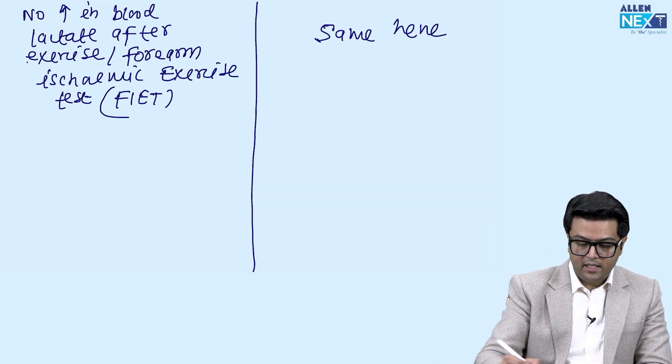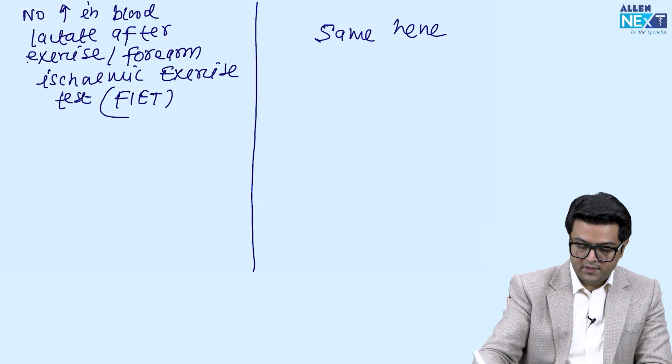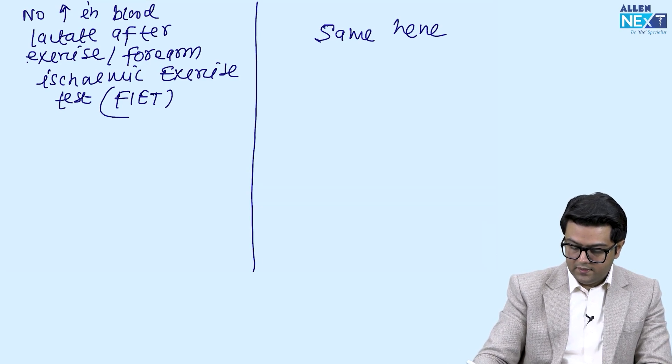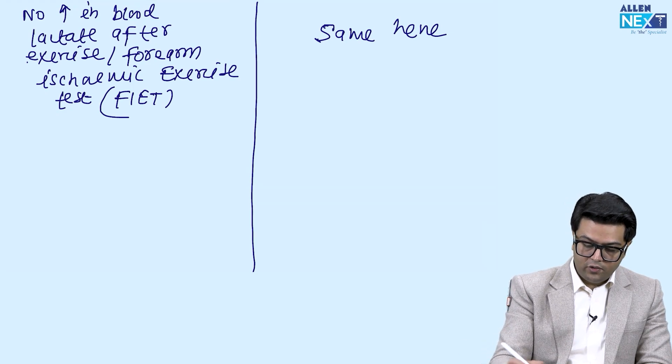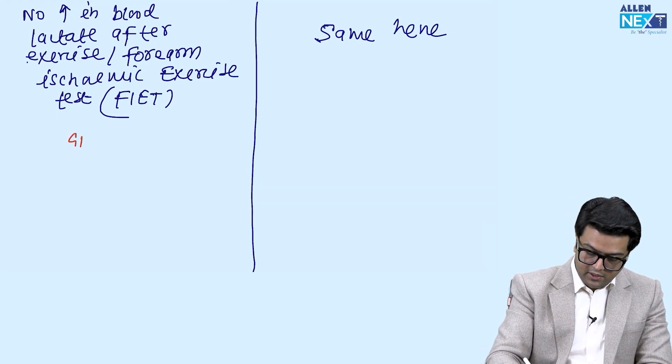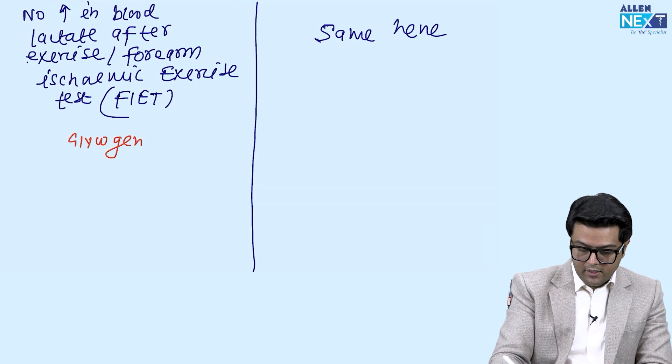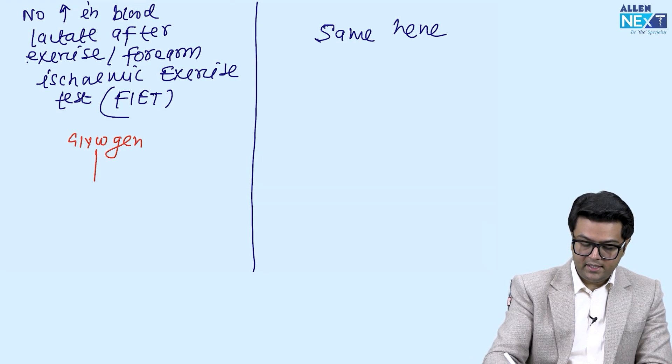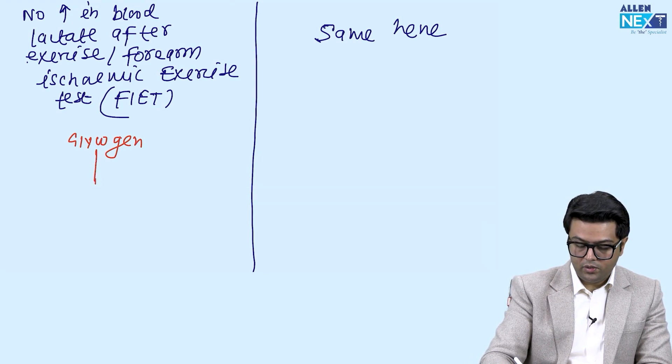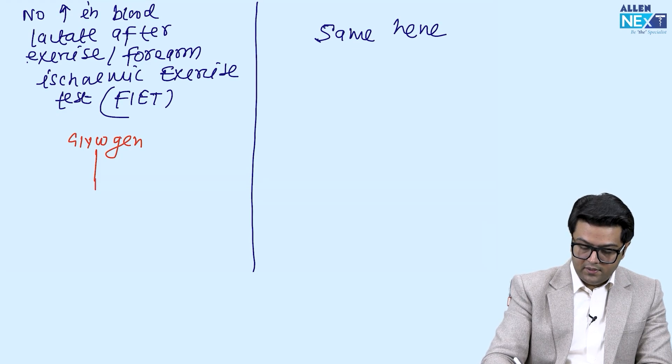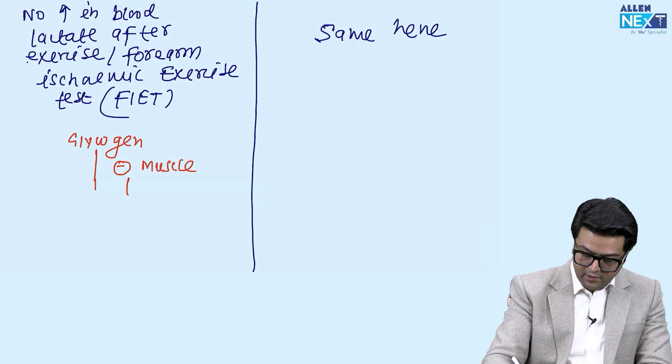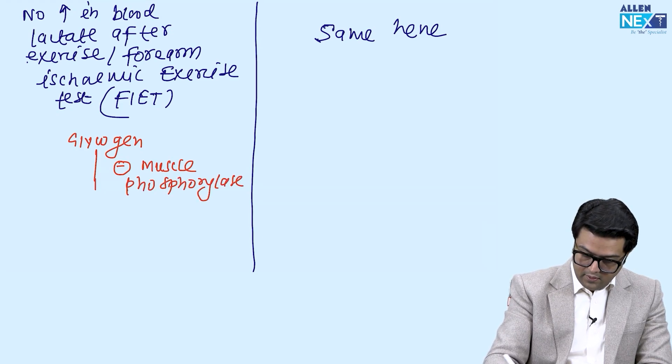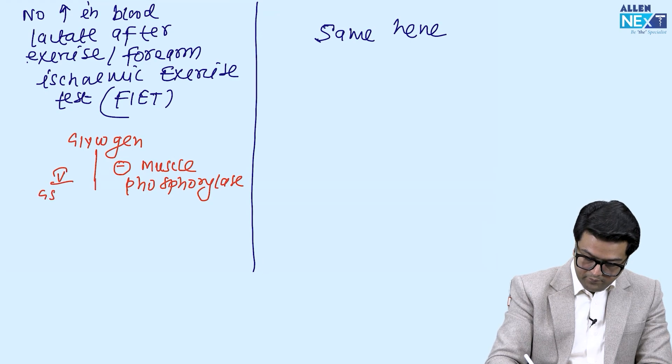This can be easily explained. There is no muscle phosphorylase or glycogen phosphorylase. When I start the glycogen metabolism, during exercise I need glycogen, glycogenolysis. There is no muscle phosphorylase, and this is type 5 GSD.